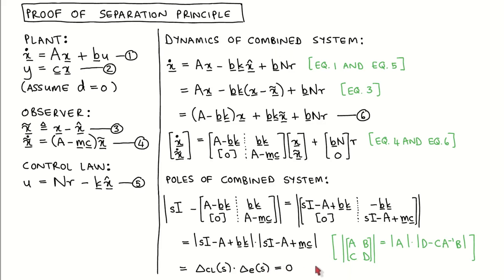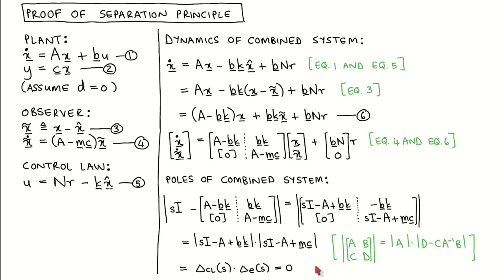This concludes the proof of the separation principle, which tells us that the poles of the combined system are the combination of the regulator poles and the observer poles designed separately.